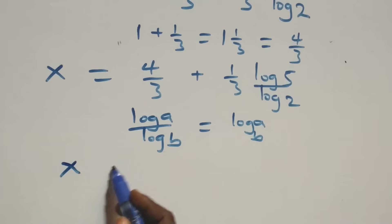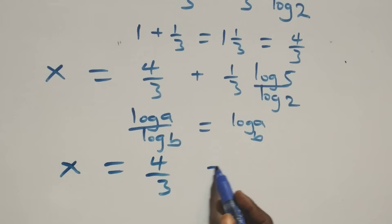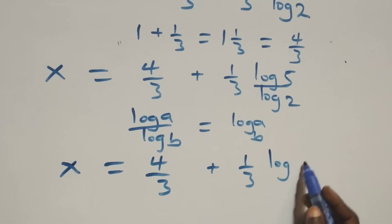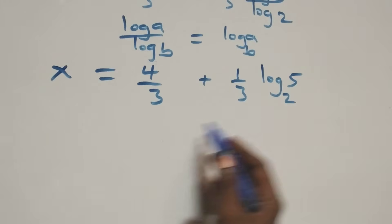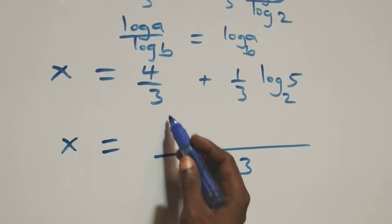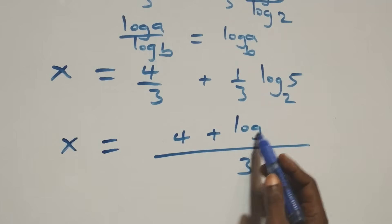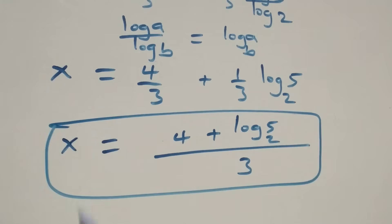So we have x equals 4/3 plus (1/3)·log₂5. Bringing this together as one fraction gives x equals (4 + log₂5) over 3. That is the final value of x.